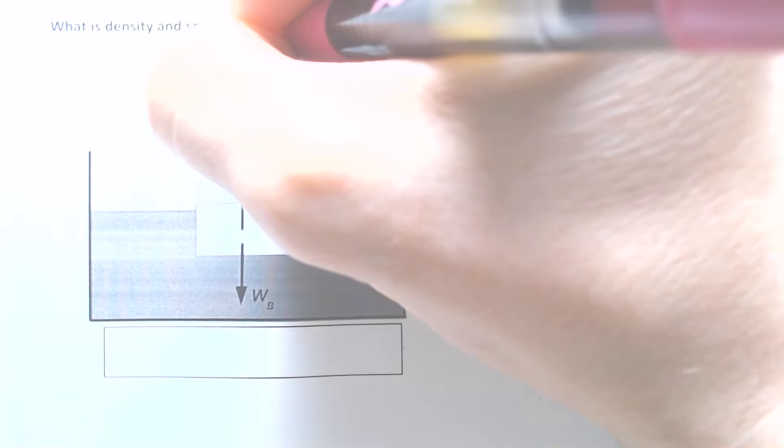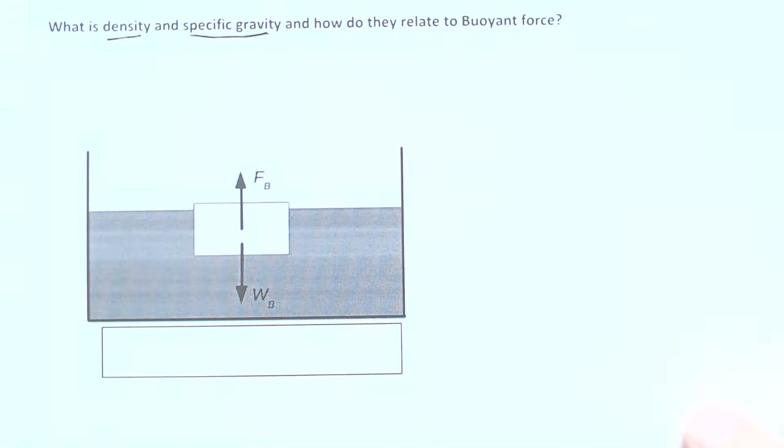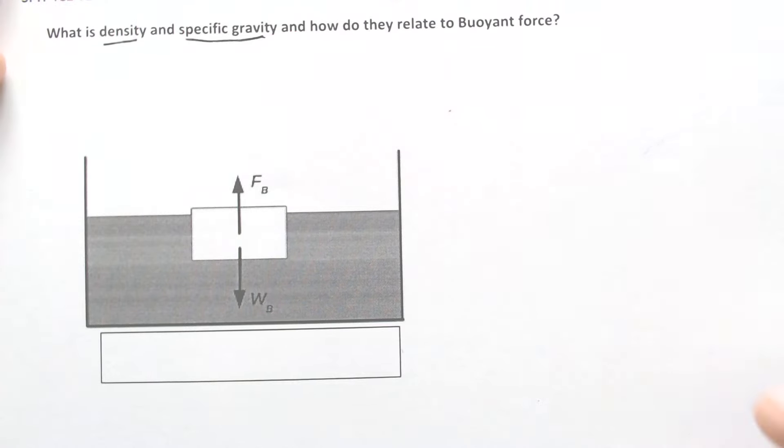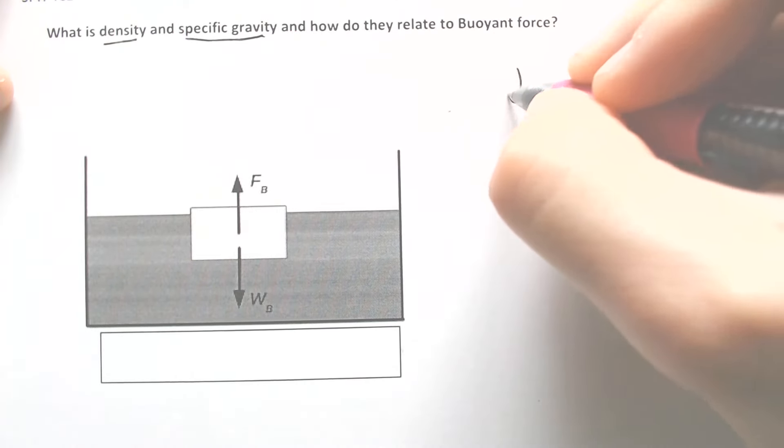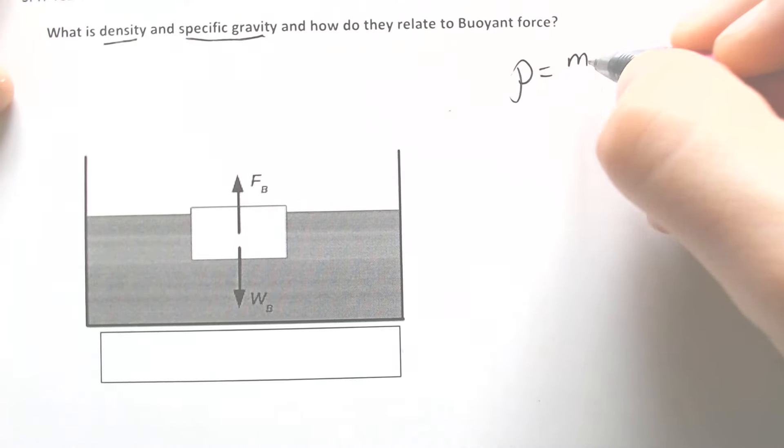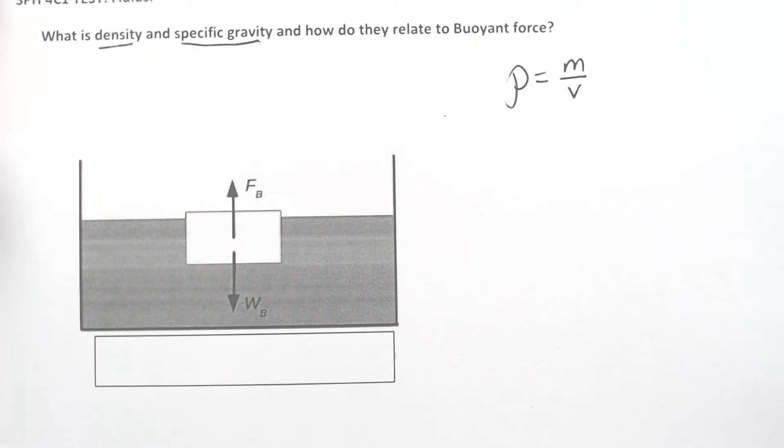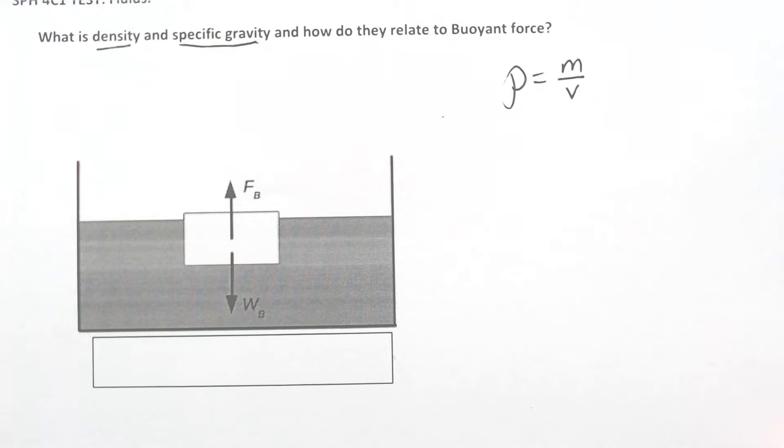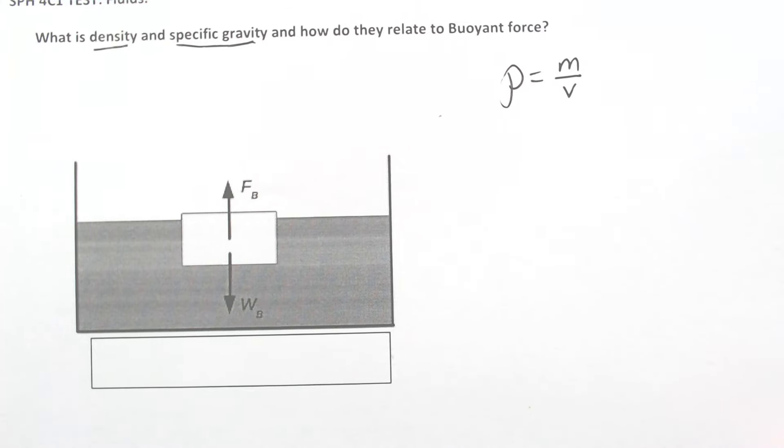So let's start with the density and specific gravity. Density is, by definition, they call it rho, is equal to mass divided by volume, which really kind of just means how much stuff is crammed into an object. A metal cube is going to weigh a whole lot more than a cube that is made out of styrofoam.